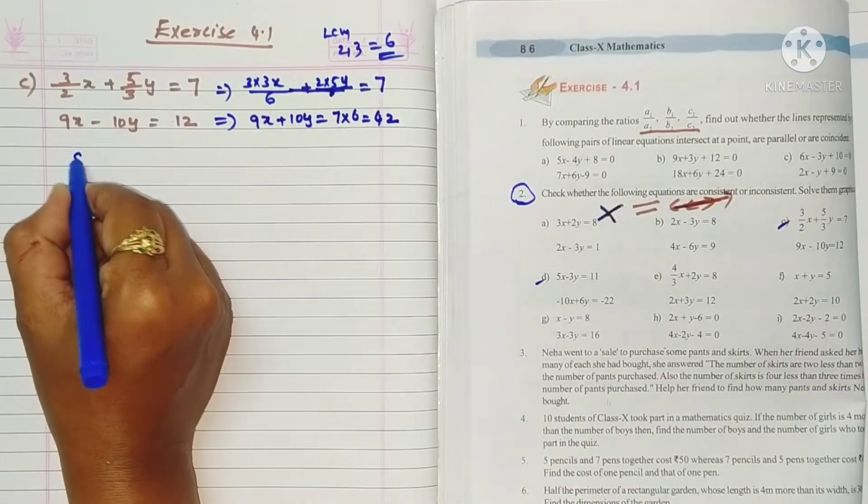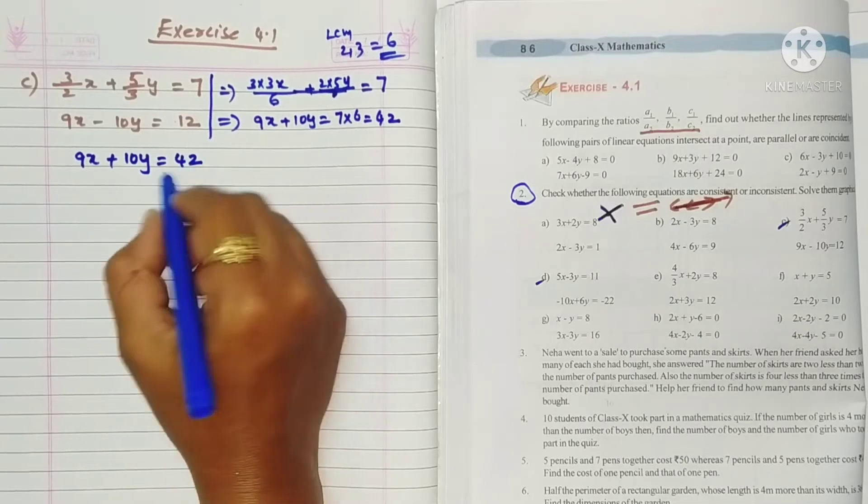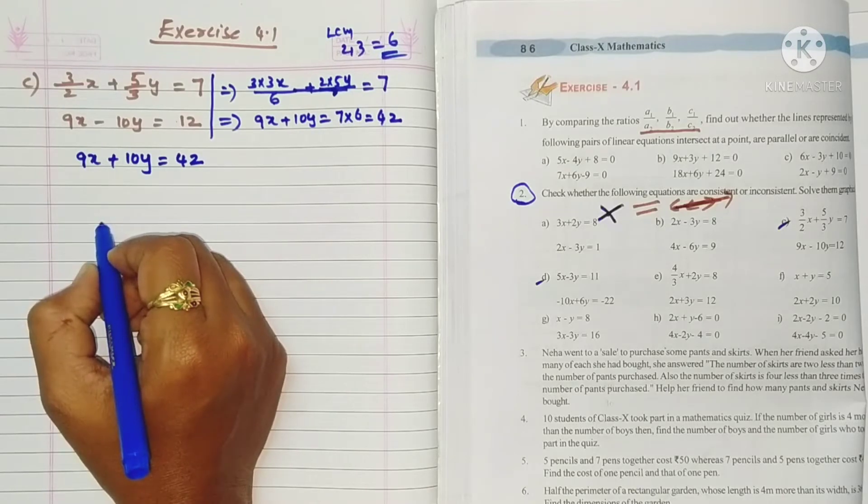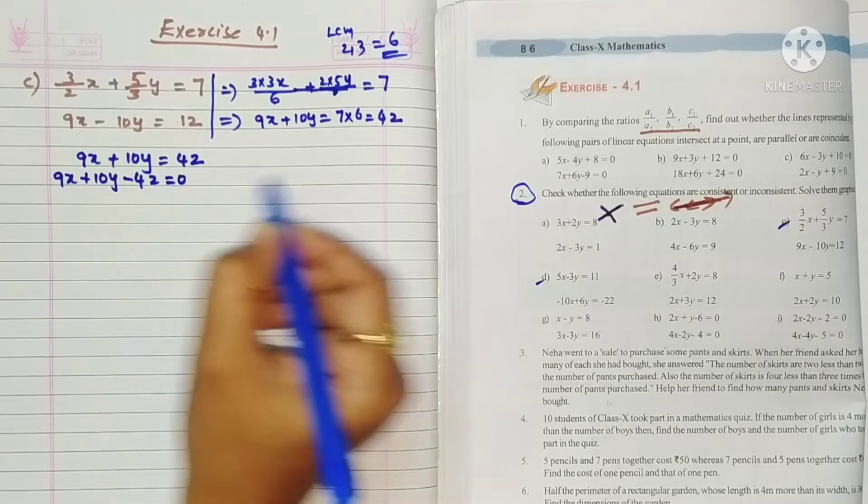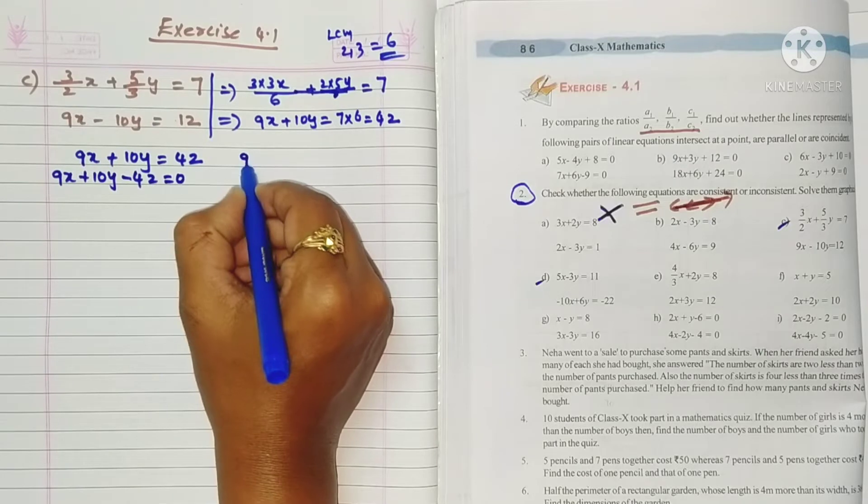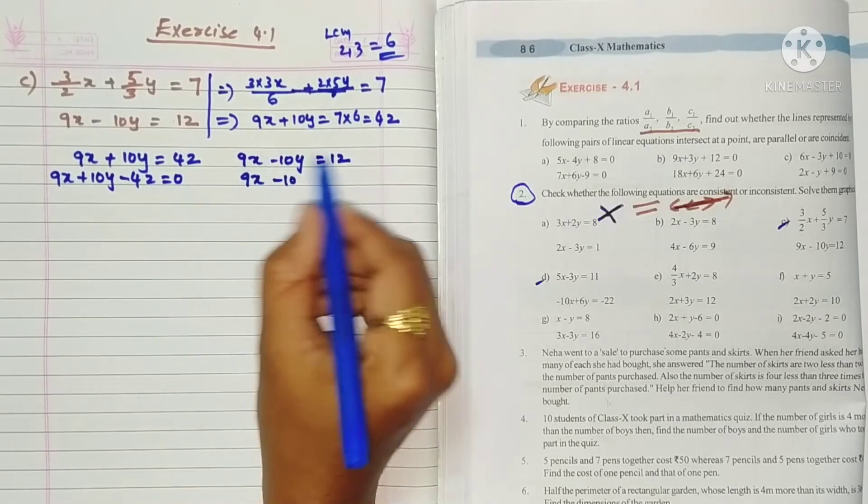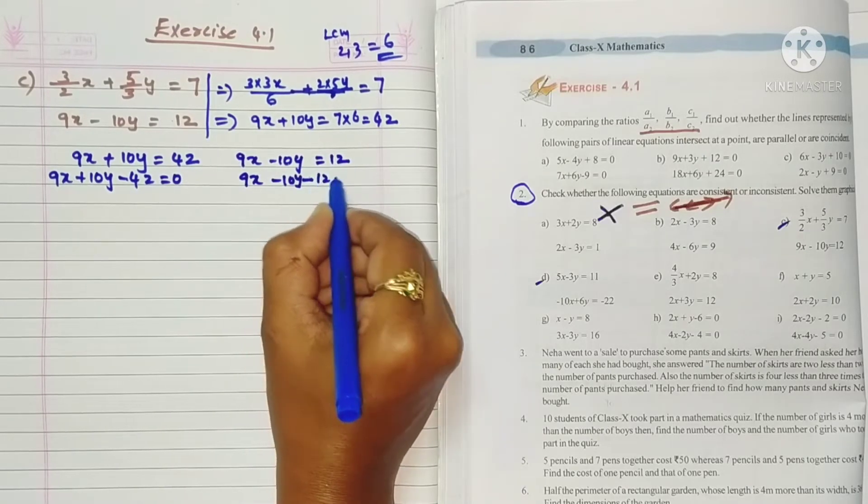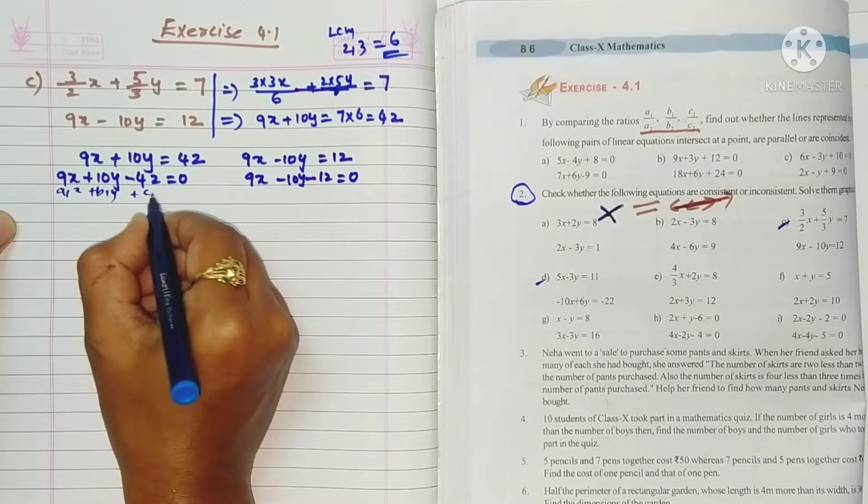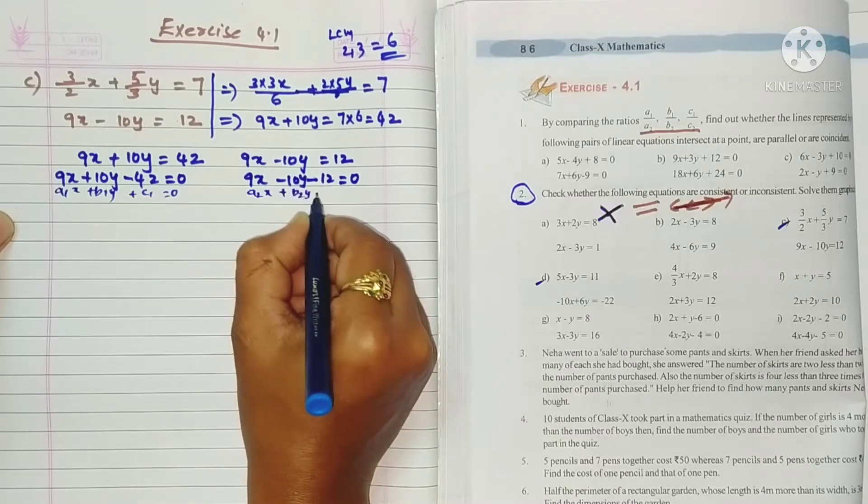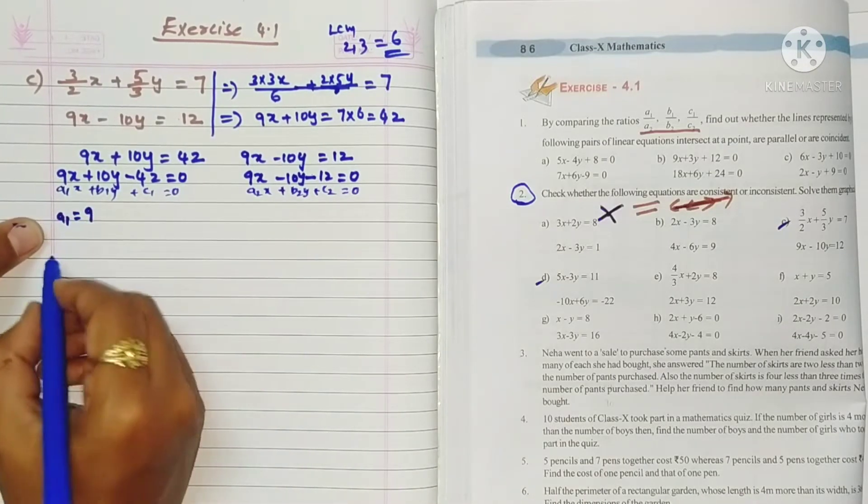So 9x plus 10y equals 42 is the first equation. We need to write all lines in the form ax plus by plus c equals zero. So 9x plus 10y minus 42 equals zero. Now the second line 9x minus 10y equals 12, again write in the form ax plus by plus c equals zero. So 9x minus 10y minus 12 equals zero.